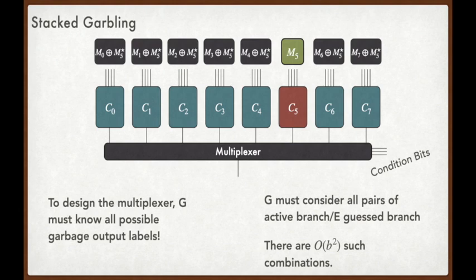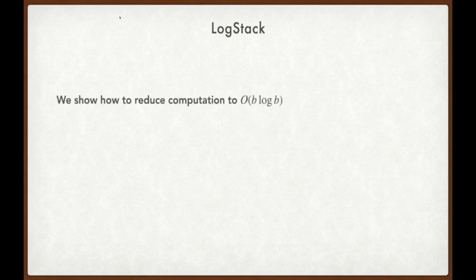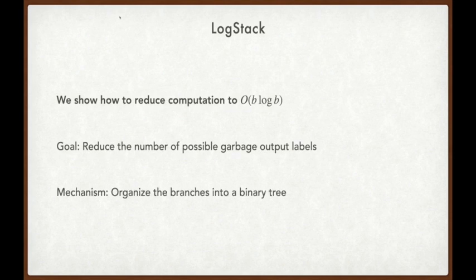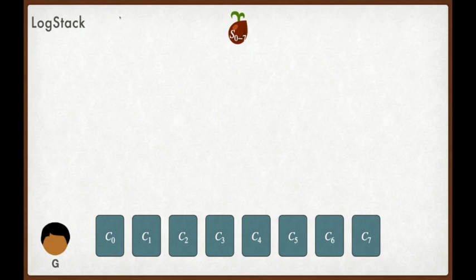Having done so, the generator can finally garble the multiplexer. To recap, to design this multiplexer, the generator G must know all possible garbage output labels, which requires G to consider all possible pairs of the active branch in combination with a guess made by E about which branch might be active. There are a total of B² such combinations. This is the source of stacked garbling's B² computation overhead. This significant computation overhead is problematic for the generator G, especially if the number of branches is large. We're finally ready to look at the Logstack construction.